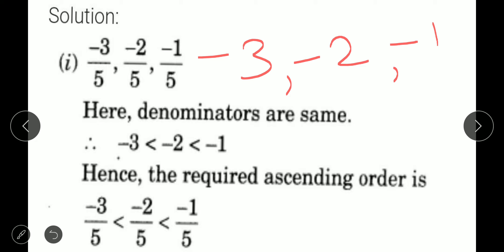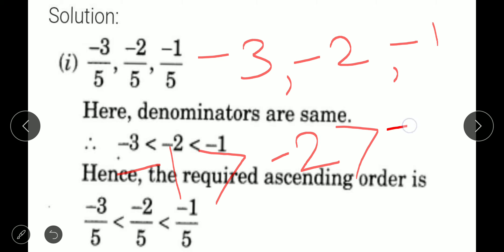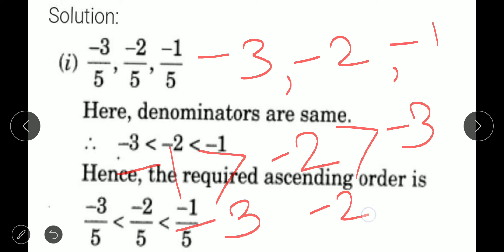The numbers are given in negatives. In negatives, the smaller number is actually the bigger number. So minus 1 is the greatest, then minus 2, and minus 3 is the smallest. But we need ascending order — smallest to greatest — so: minus 3, then minus 2, then minus 1.